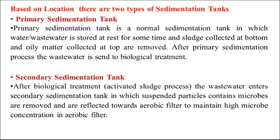Based upon their location, there are two types of sedimentation tank: the primary sedimentation tank and the secondary sedimentation tank. The primary sedimentation tank is a normal sedimentation tank in which wastewater is stored at rest for some time. Sludge collected at the bottom and oily matter collected at the top are removed periodically. After primary sedimentation, the wastewater is sent for secondary treatment or biological treatment.